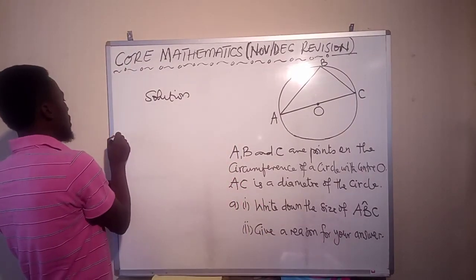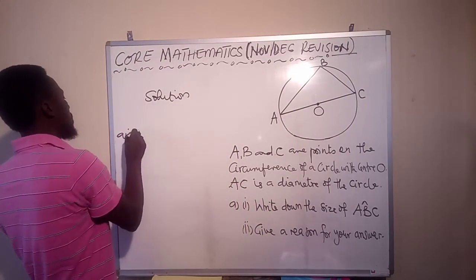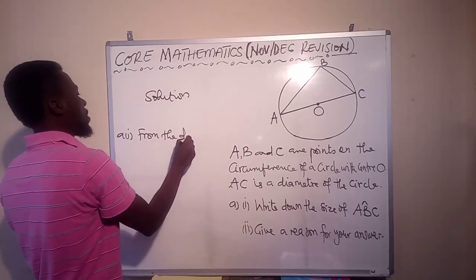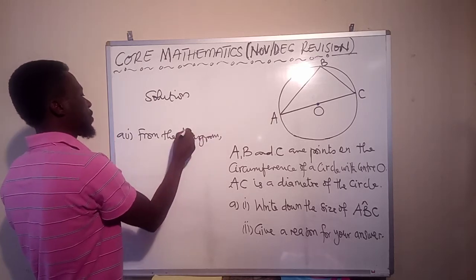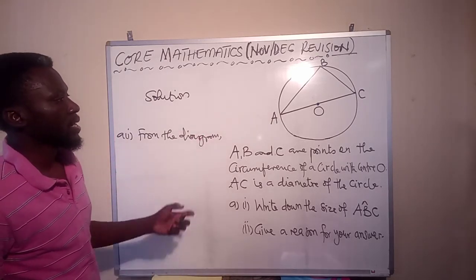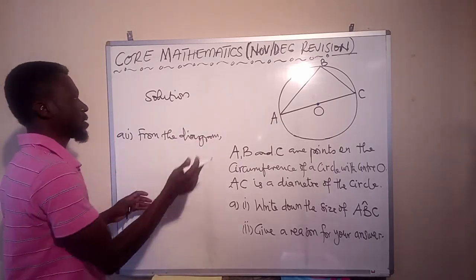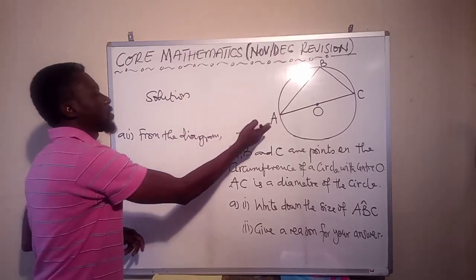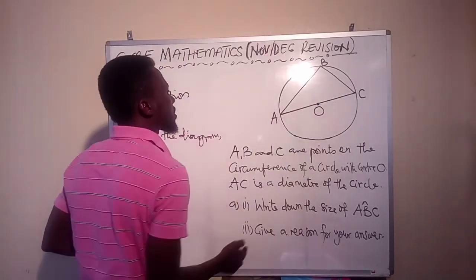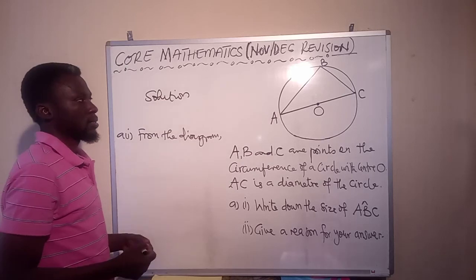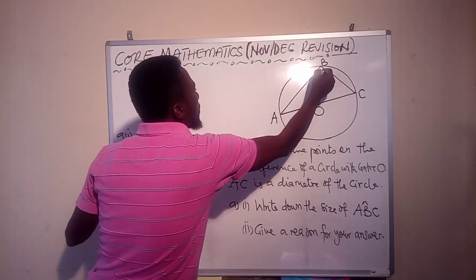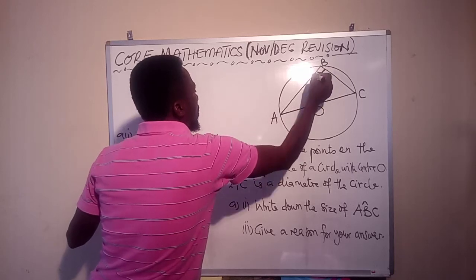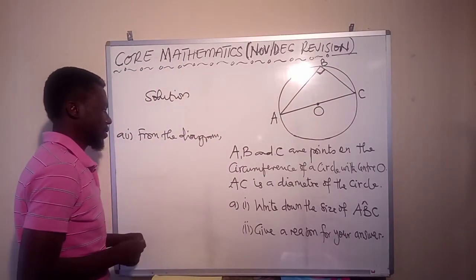So we say that from the diagram, because we are told instructionally that AC is the diameter, so that tells you that this part is a semicircle where the triangle is. All right. So this will give us a right triangle. That is 90 degrees.